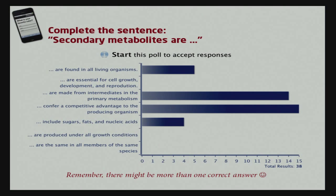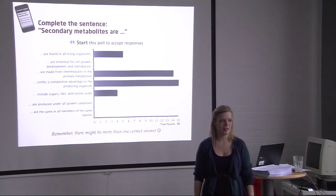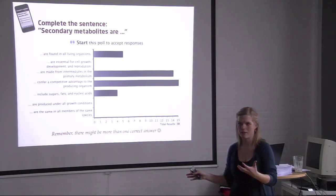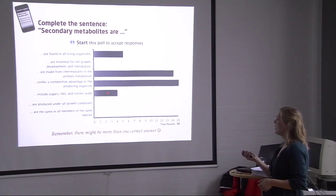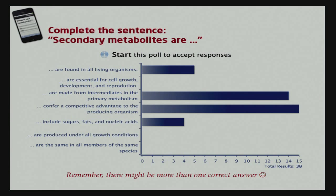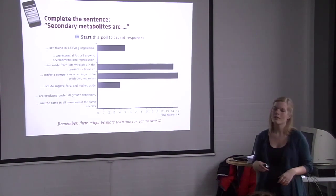I'm very happy that none of you answered that secondary metabolites are essential for growth, development, and reproduction, because that is what primary metabolites are involved with. A lot of you agreed that they are made from intermediates coming from primary metabolism, and that is correct as well. Secondary metabolism can be seen as a second layer of metabolism in that sense. They confer a competitive advantage to the producing organism — they're not essential for growing and living, but they're essential for growing and living better than others and staying alive.